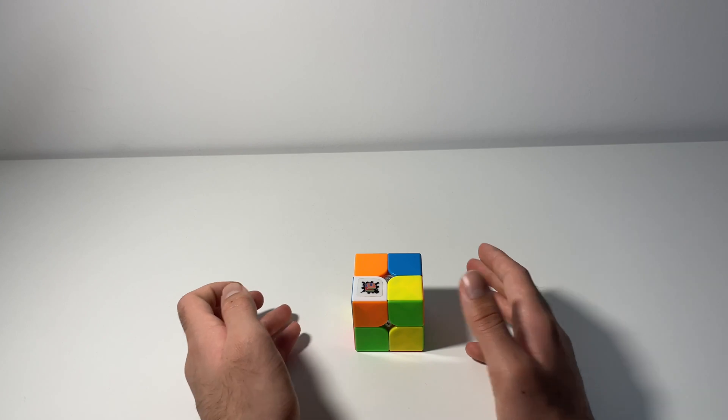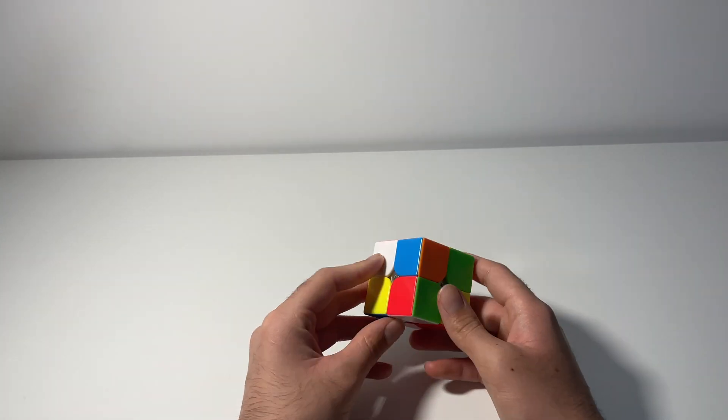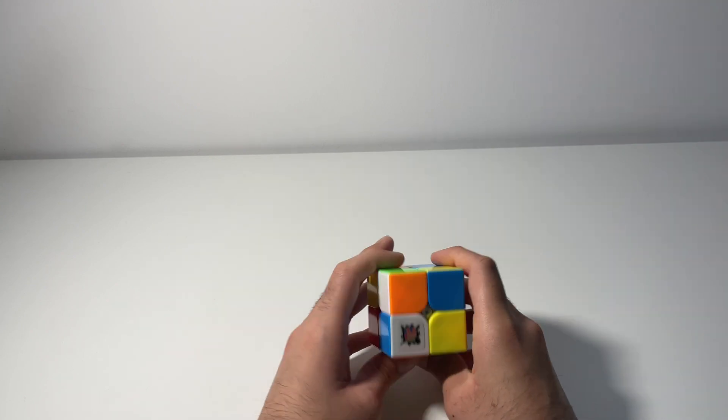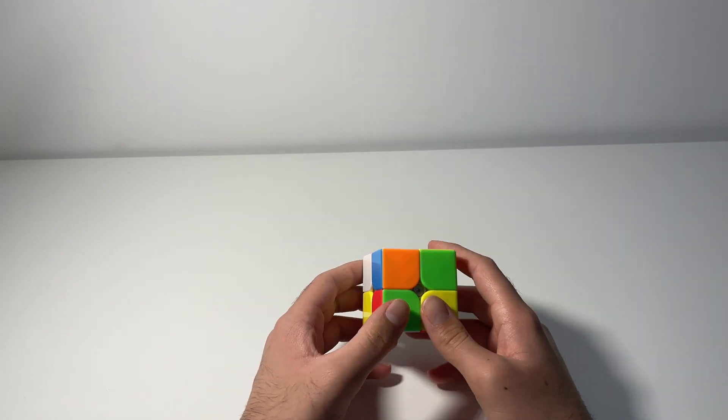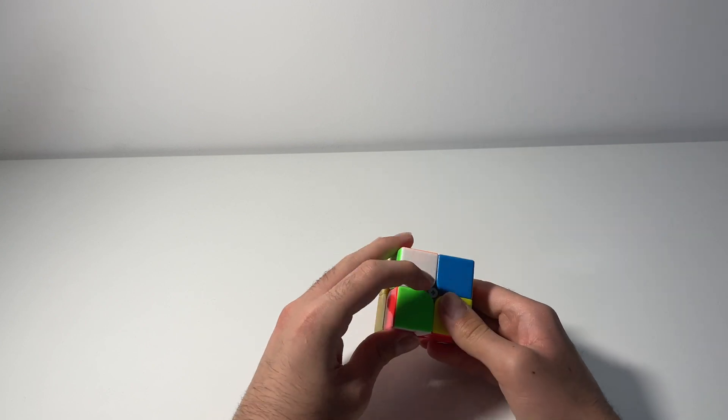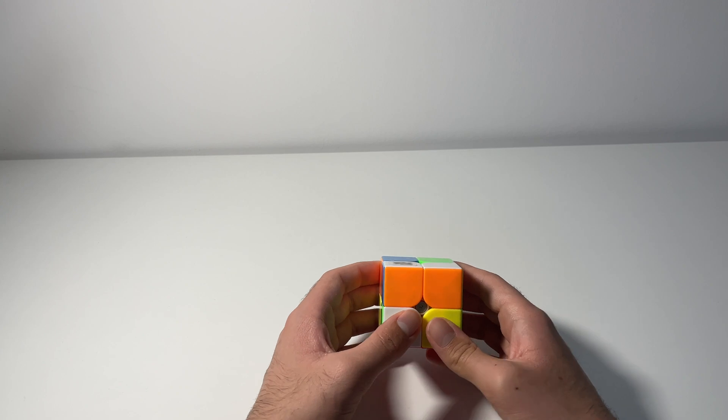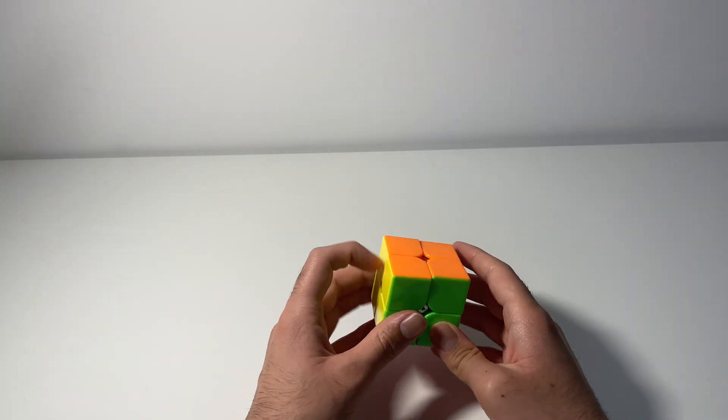Okay, so for the third scramble, what I did was a red EG1 face with bar on the back. So what I did was something like this, and then a U2, and a very easy EG1 case, like so, with a U' AUF.